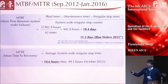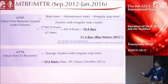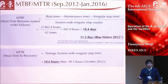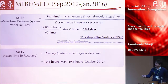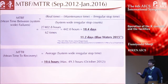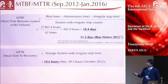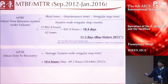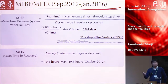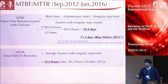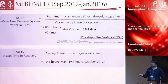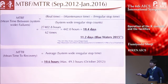Longer MTBF is better. On the other hand, MTTR means mean time to recovery, and shorter MTTR is better. MTTR is defined as the average system-wide irregular stop time: 10.6 hours for K-computer, with a maximum TTR of 49.3 hours, which was just at the beginning of operation. Now the system is stable. I couldn't find MTTR data for other supercomputers to make a comparison.